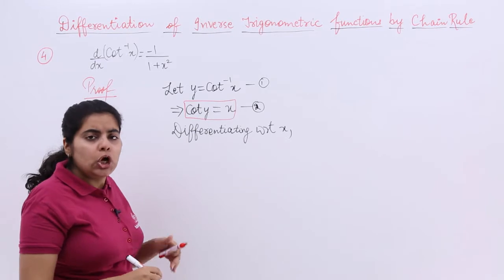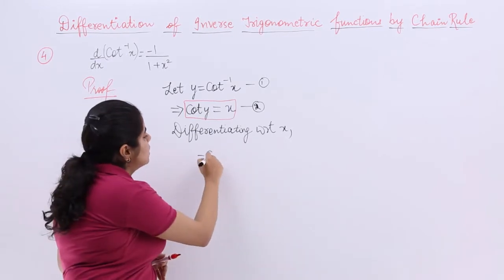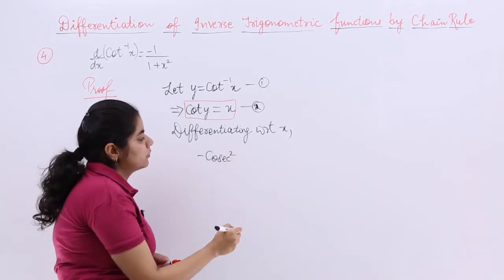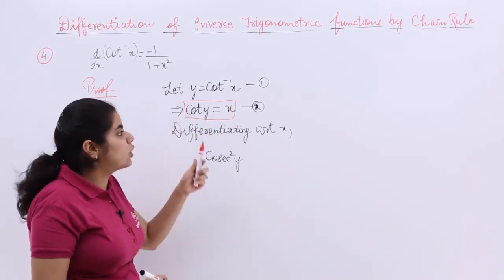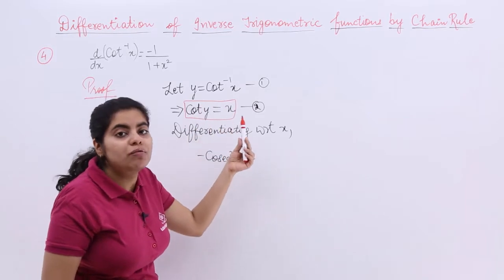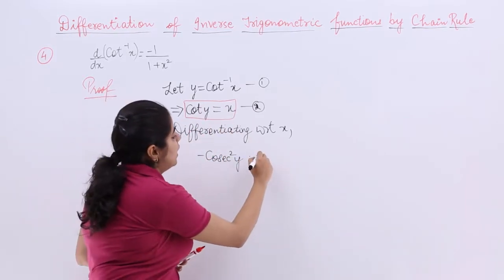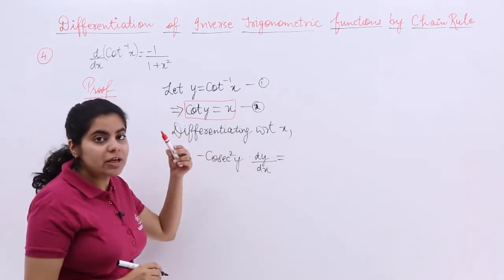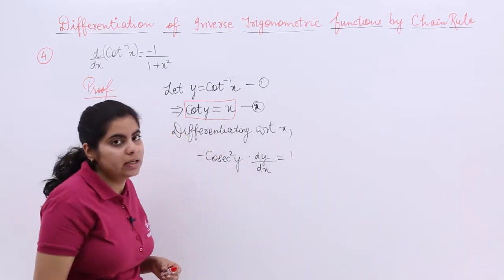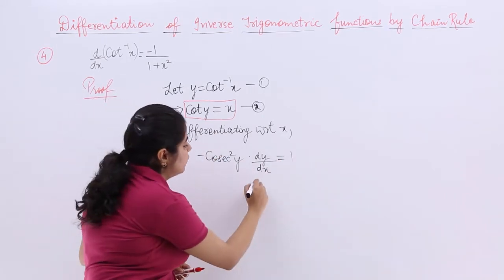What is it here? Cot y. Cot differentiation is minus cosecant square. Y will remain. Now what is by chain rule the differentiation of y? Because you started with cot, you saw y also. So it is dy/dx. What is the differentiation of x with respect to x? Nothing but 1.